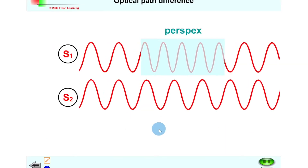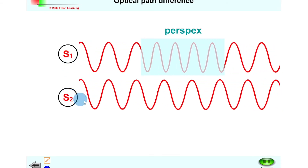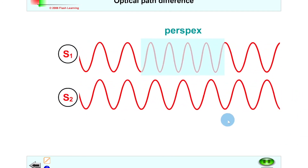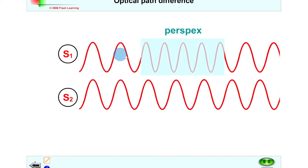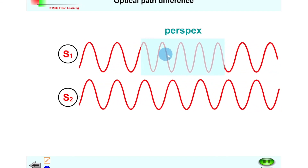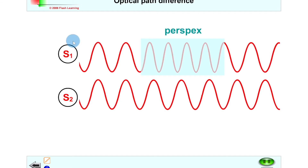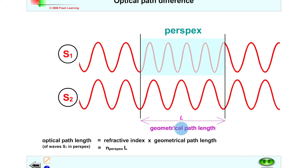A simulation helps visualize this. Waves from S1 pass through the perspex (a more dense material), while waves from S2 travel through air. The waves are in phase initially, but the S1 waves bunch up — wavelength decreases — inside the perspex, and spread out again on exit, coming out out of phase with the S2 waves. The geometrical path length L is the length of the perspex block, and the optical path length is n_perspex times L.